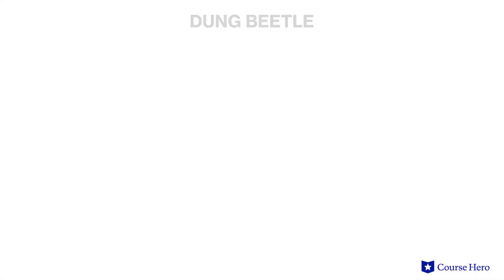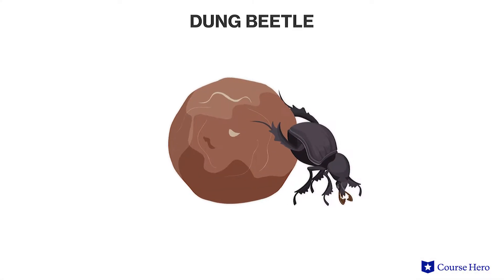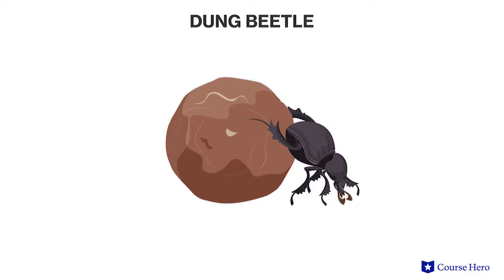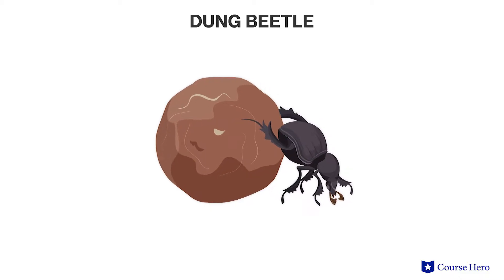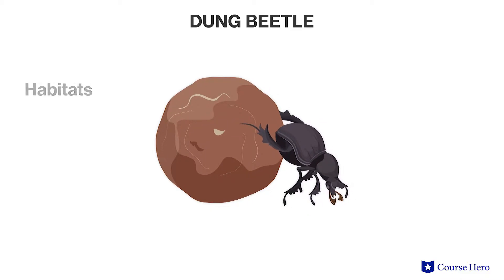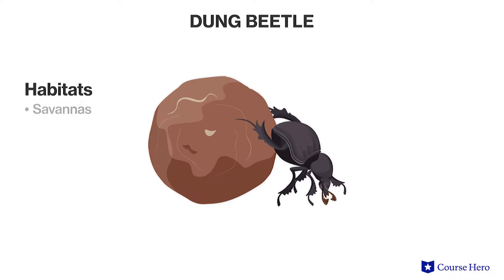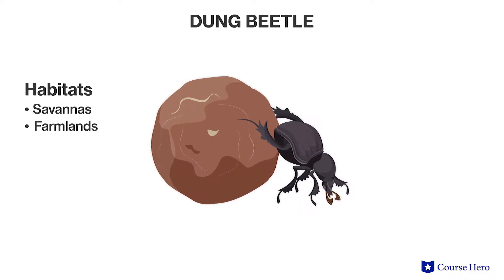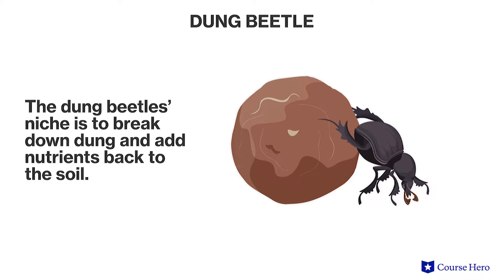For example, a dung beetle of South Africa specifically lives in and feeds on the dung of wild elephants and buffalo. Dung beetles live in many habitats, including savannas and farmlands. The dung beetles' niche, however, includes its job of breaking down dung to more rapidly add nutrients back into the soil.